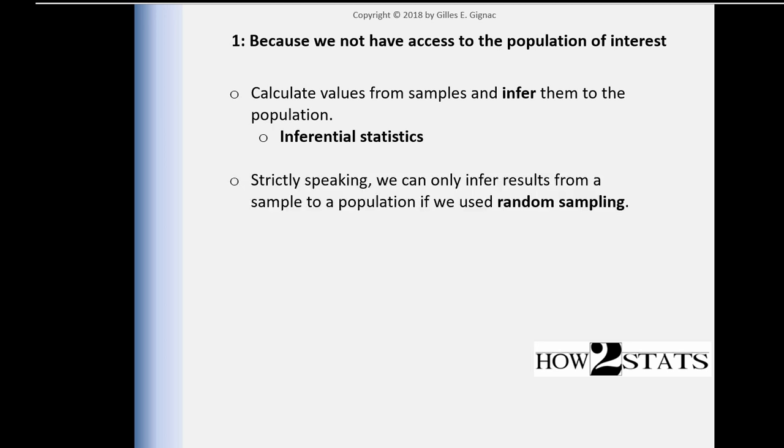Inferential statistics is about estimating the values with samples to a population and determining how much confidence we can interpret those results. Strictly speaking, we infer results from a sample to a population if we used random sampling.